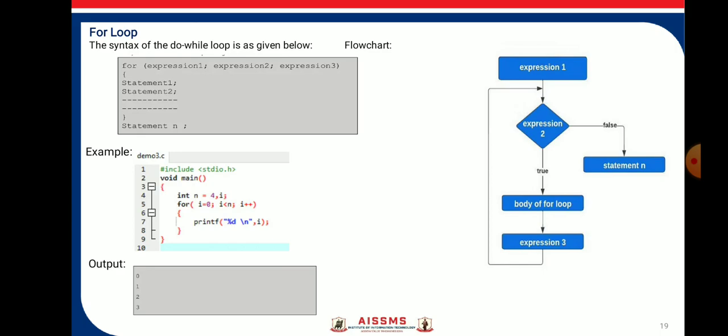In the for loop, expression one initializes the variable, expression two is evaluated, and if the condition is true, the body of the for loop is executed, followed by expression three for updation. This process repeats as long as the condition is true. Once the condition is false, control returns to the statement following the for loop and executes those statements.